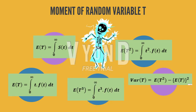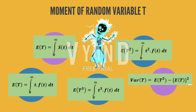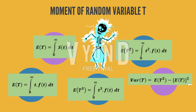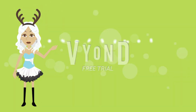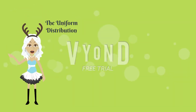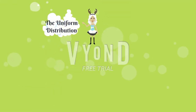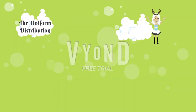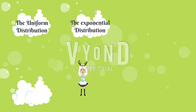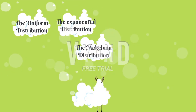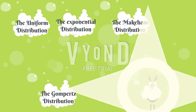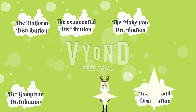If the final answer is a negative value, it means the graph is skewed to the left. If the final answer is a positive value, it means the graph is skewed to the right. That's all for this subtopic. Now let me introduce a few examples of parametric models: uniform distribution, exponential distribution, Makeham distribution, Gompertz distribution, and Weibull distribution.